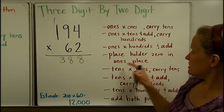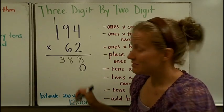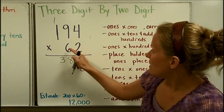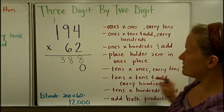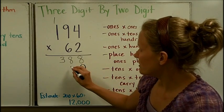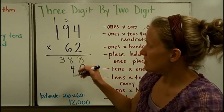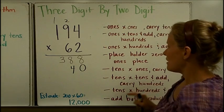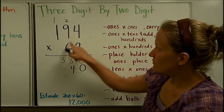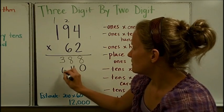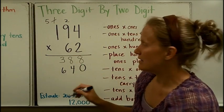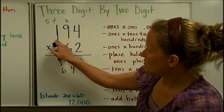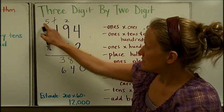Now, I'm going to put a placeholder 0 in the ones place. The reason is because I'm getting ready to multiply by 60, not by just a 6. Now, I'm going to do the tens times ones and carry the tens. So, I'm going to do 6 times 4 is 24. Carry the 2 tens. Now, I'm going to do tens times tens and add this 2, and then carry any hundreds. 6 times 5 is 54, 55, 56. I'm going to cross off that 1 so I don't add it again. Then, I'm going to do tens times the hundreds and add. 6 times 1 is 6, plus 5 is 11.